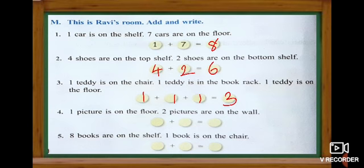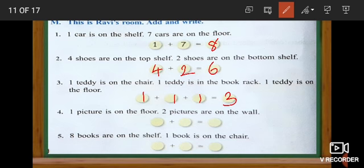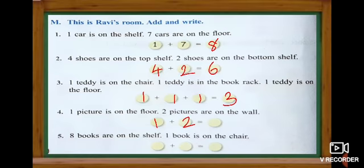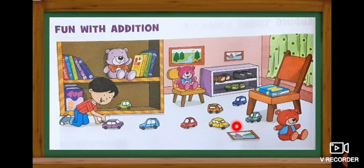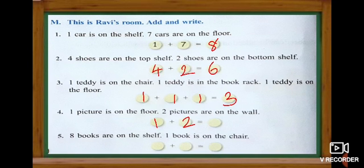Look at the next one. One picture is on the floor and two pictures are on the wall. First number: one. And then two. We have to add and find the answer. One picture on the floor — one. Two pictures on the wall. Count: one, two, three. Totally how many pictures? Three pictures.